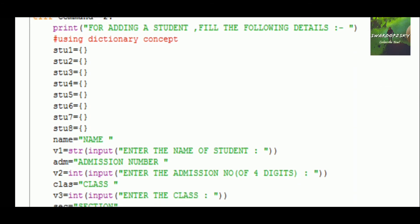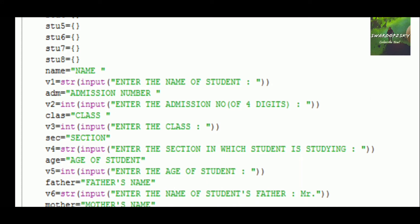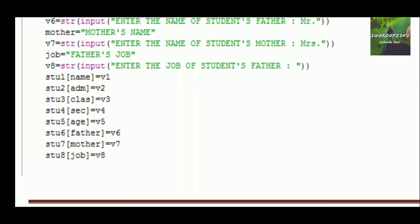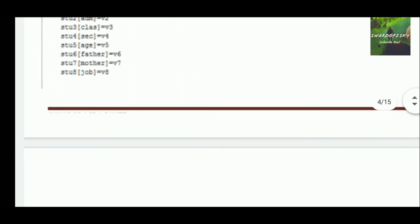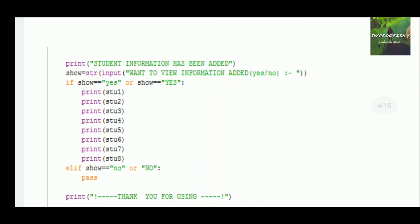We can use elif again and again as many times as needed. Here we are making from stu1 to stu8 — empty dictionaries — and for every empty dictionary we are setting up values from user entry: their index name, admission number, class, and other details. These are saved in the dictionary such that stu1['name'] equals the value — key-value pairs.